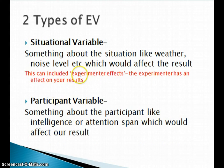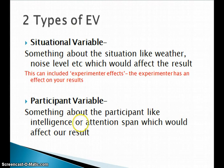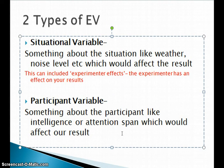Situational variables may also include experimenter effects — basically, any effect the experimenter has on you. For example, if the person giving you the test is very attractive, that might affect how well you do, and that would be a situational variable. The participant variable is another type of extraneous variable — something about the participant themselves, like intelligence. So we have situational variables, where the situation causes the change, and participant variables, where the participant themselves causes the change.